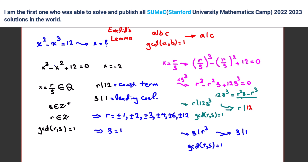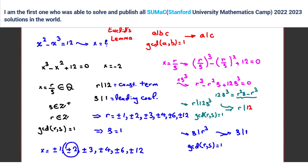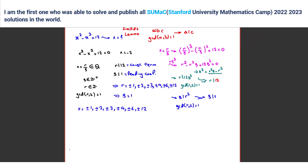So what are the possible rational roots? They are r over s, giving ±1, ±2, ±3, ±4, ±6, ±12. If we check all these numbers and none work, we conclude there are no other rational roots — you don't need to check ±5, ±7, etc. We check these and find that x = -2 is our answer.